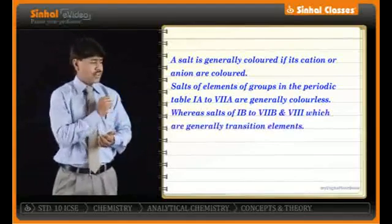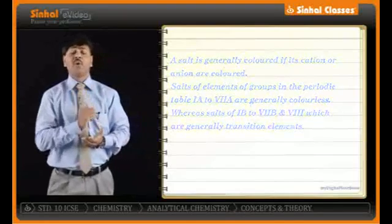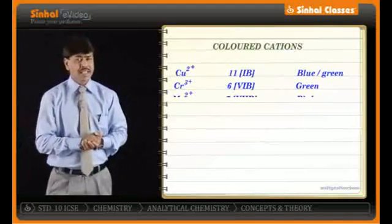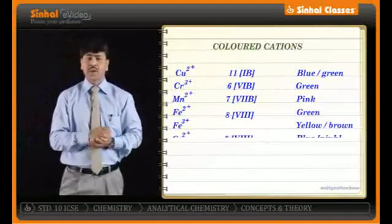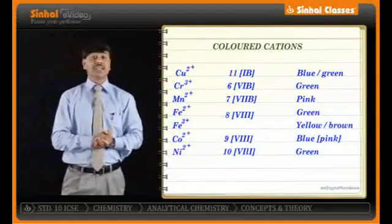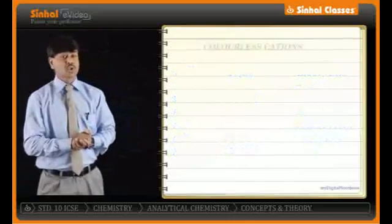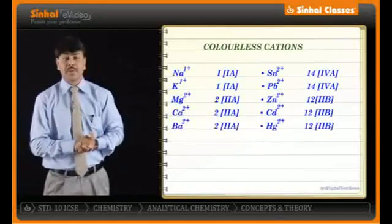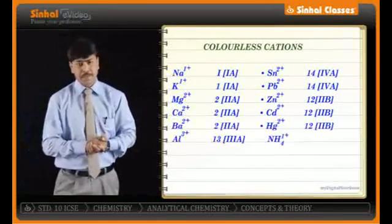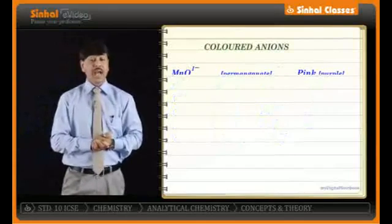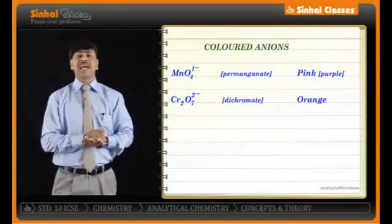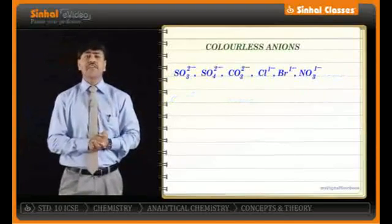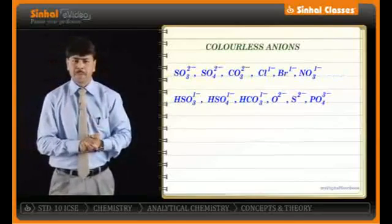Salts of groups 1B to 7B and group 8, which are generally transition elements, form colored cations. Copper, chromium, manganese, ferrous, ferric, cobalt, and nickel generally form colored cations, whereas sodium, potassium, magnesium, aluminium, barium, and calcium form colorless cations. In the case of anions, dichromate and permanganate form colored anions, whereas sulfate, carbonate, and nitrate form colorless anions.